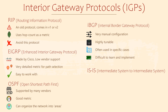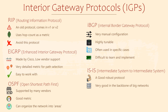IS-IS is a very robust protocol. It's not common in small and medium networks — it's generally only used in very large networks, like service providers. This is because it creates a logical backbone that can grow as needed. While it works well, it's definitely not as popular as other routing protocols, and it works a bit differently to the others, which can make it harder to learn and use.